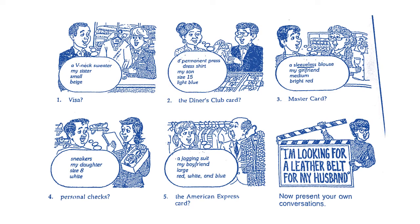Number Three — a sleeveless blouse for my girlfriend, medium size, bright red color. Number Four — sneakers for my daughter, size eight, white color — وأنا برس شيك — دفع بشيك شخصي. Number Five — a jogging suit for my boyfriend, size large, color red, white and blue. وطبعاً الدفع بـ American Express card.